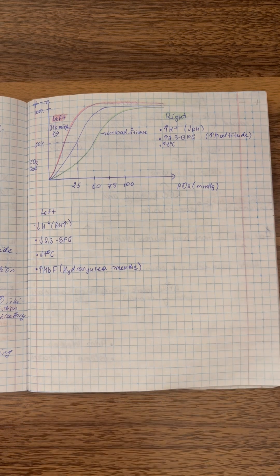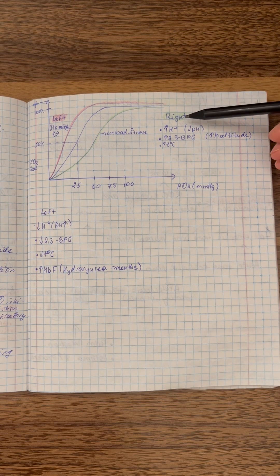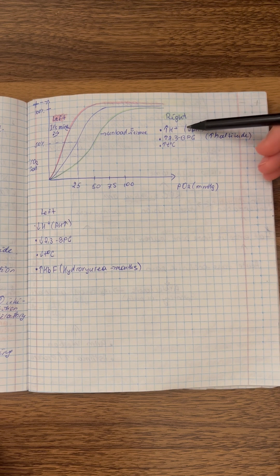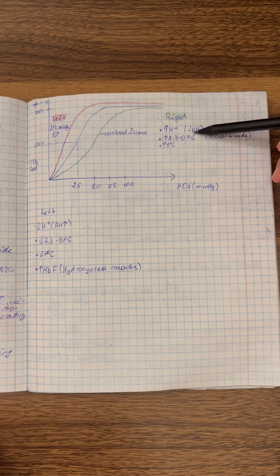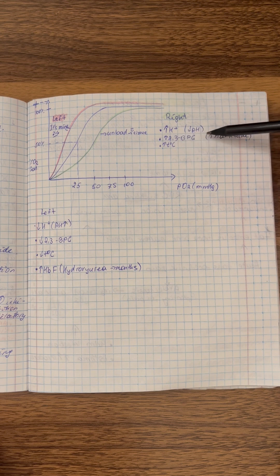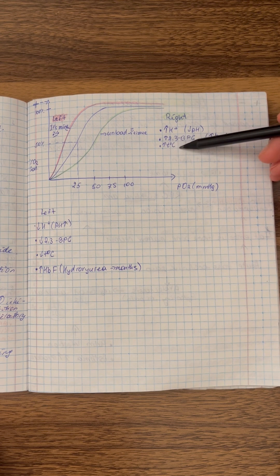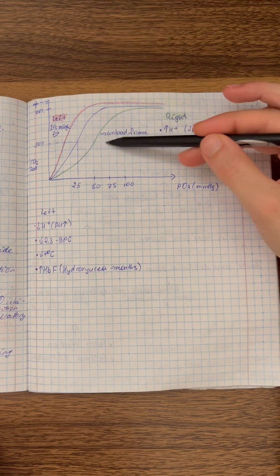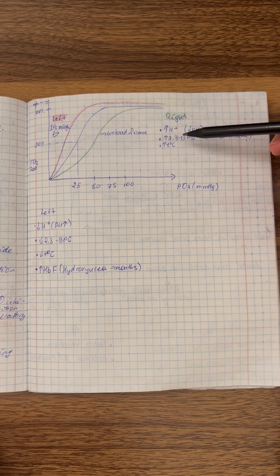Now let's talk about the right shift. We can see the green diagram. Everything that is opposite to the left shift causes can occur during right shift. So increased H+, which is decreased pH, increased 2,3-BPG amount, and increased temperature. All this can cause right shift. Right shift means that the hemoglobin will give oxygen to the tissues. Thank you. Bye.